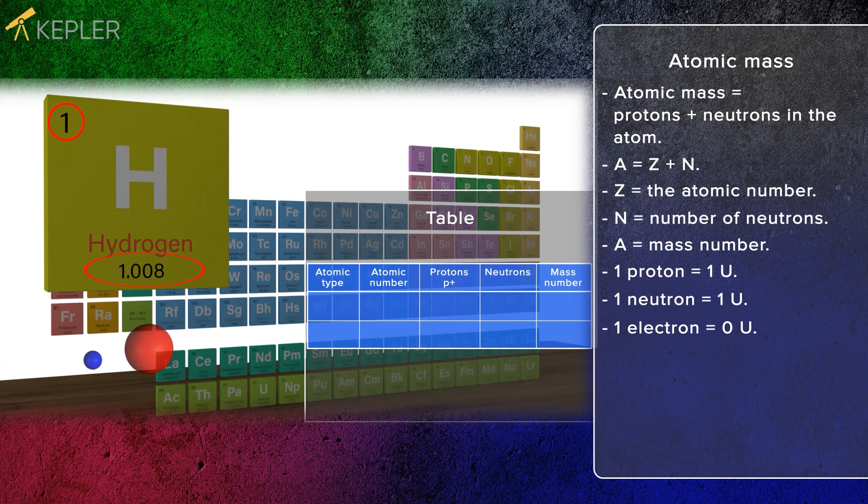The difference between the mass number and the atomic number is the number of neutrons. This means that there are no neutrons in a hydrogen atom because the atomic number and mass number are the same.